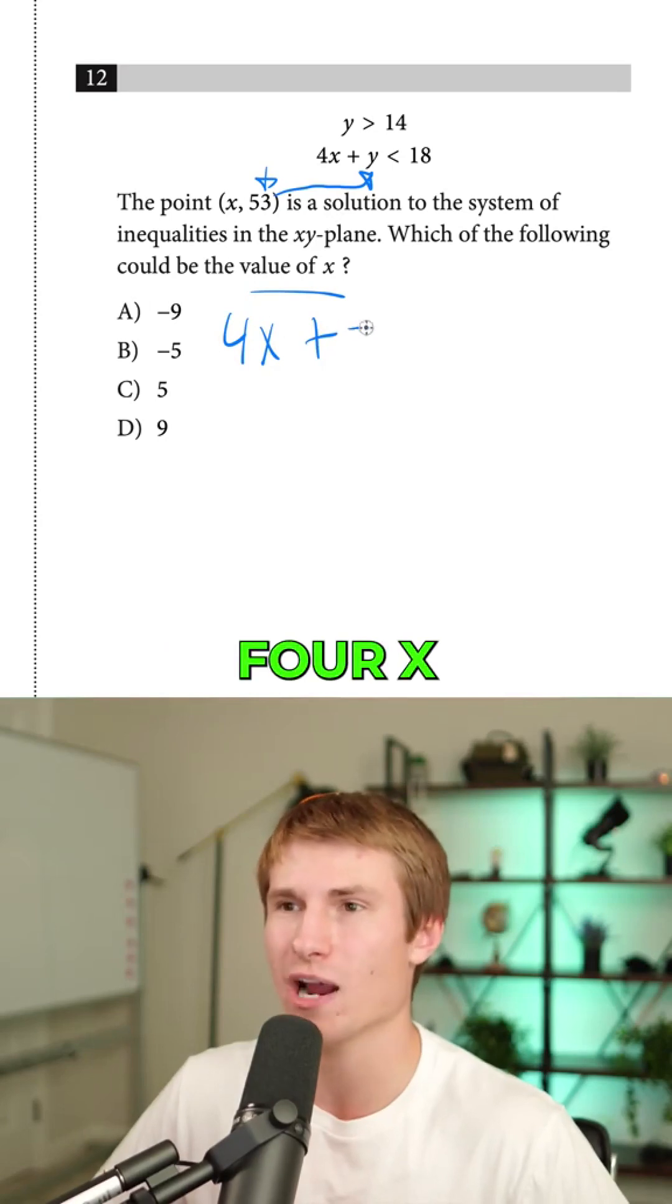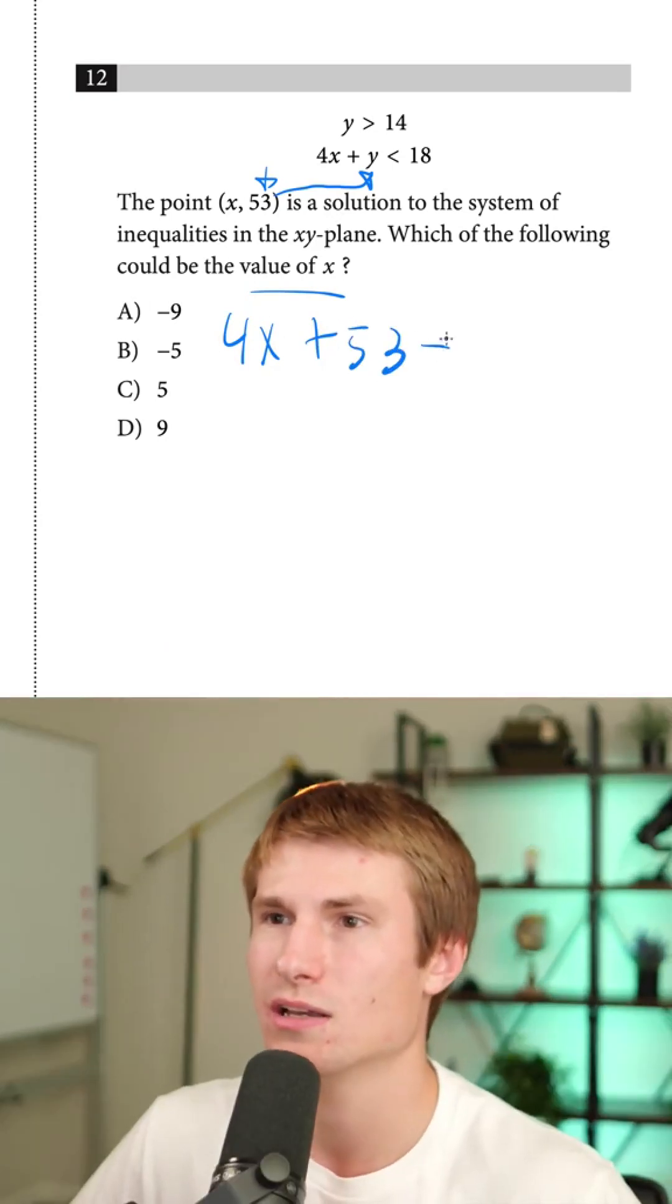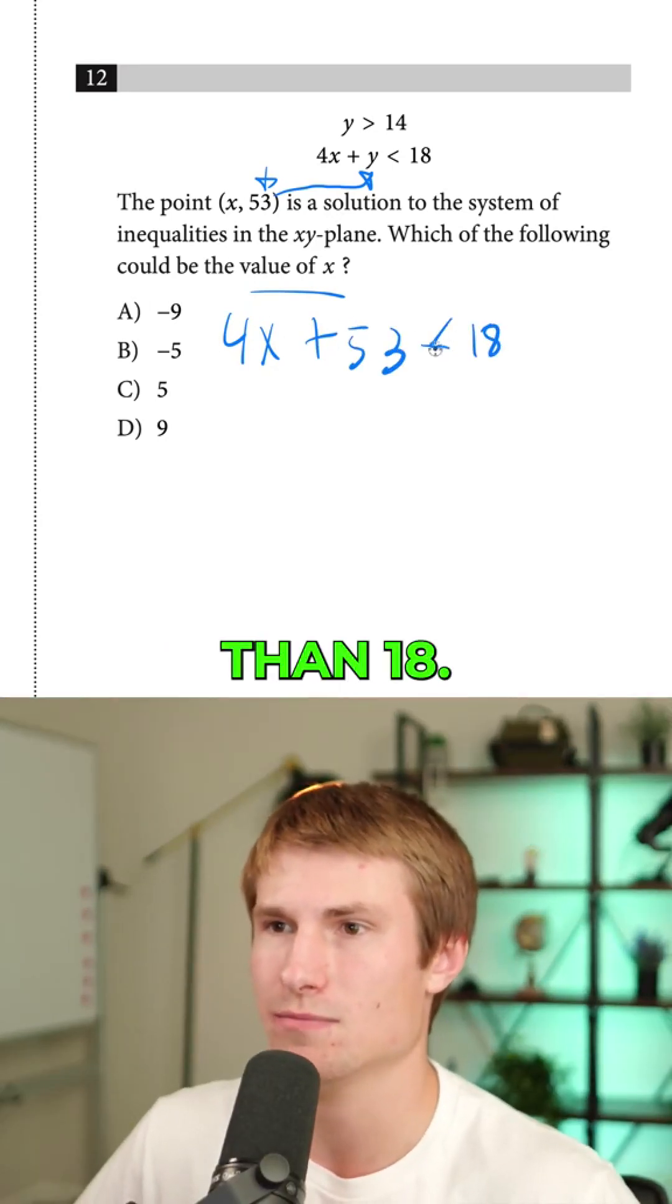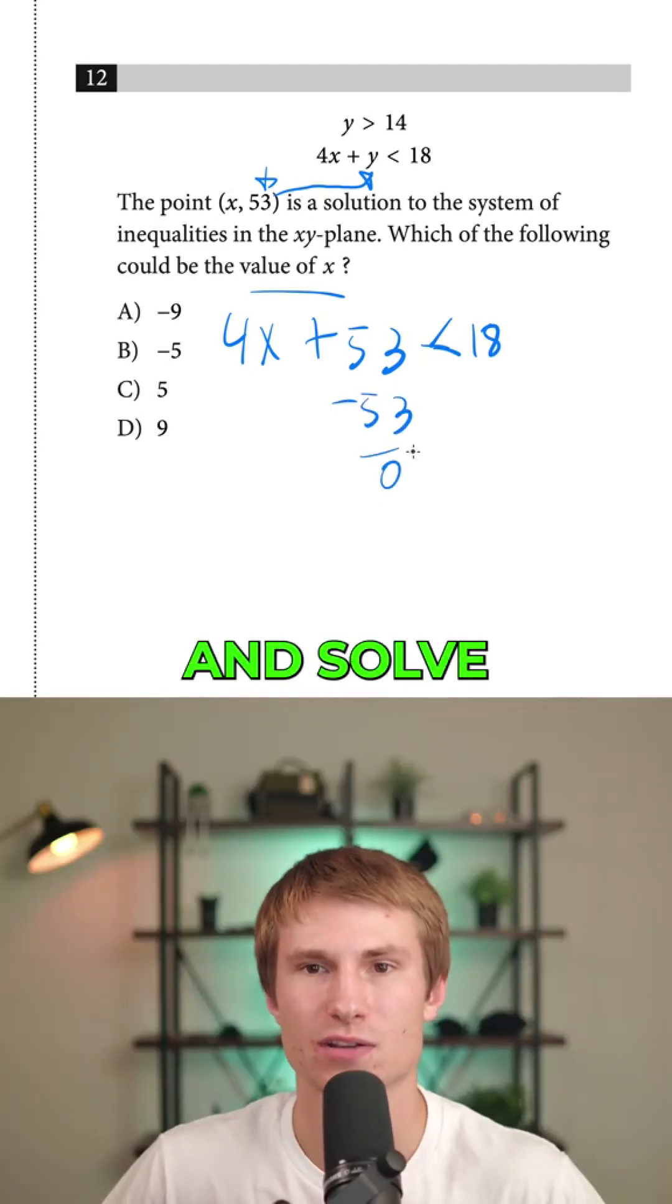It's going to end up being 4x plus 53 must be less than 18. Okay, now that we've got this set up, let's go ahead and isolate x and solve for it.